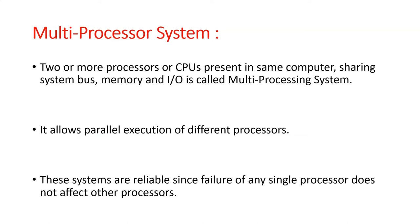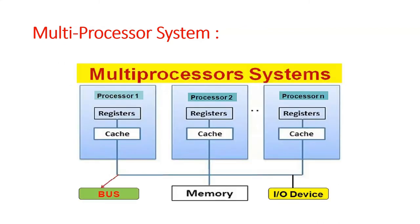Now let us observe multi-processor systems. A multi-processor system has two or more processors or CPUs present in the same computer, sharing the system bus, memory, and I/O devices. Let us observe this diagram.